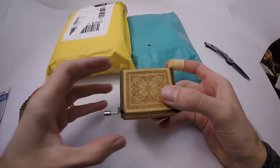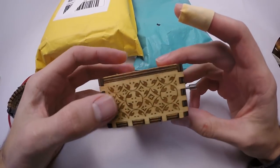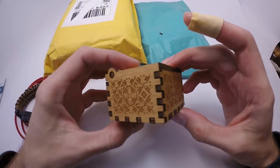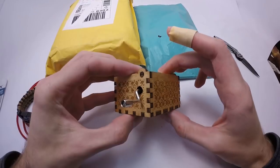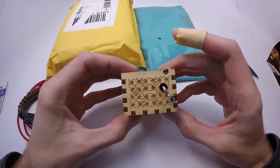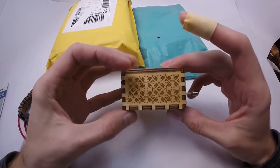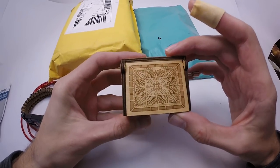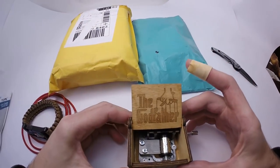In this parcel we have a musical box. It looks really nice with all these fretworks. And inside it has a Godfather logo. Let's see how it works.